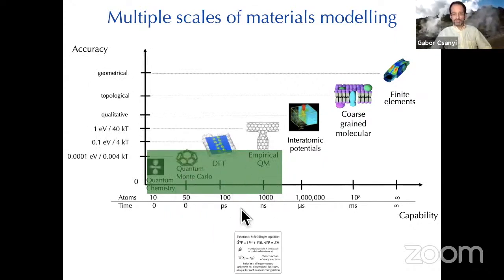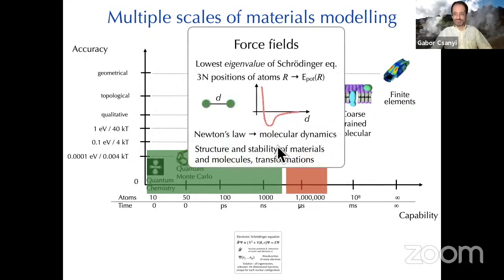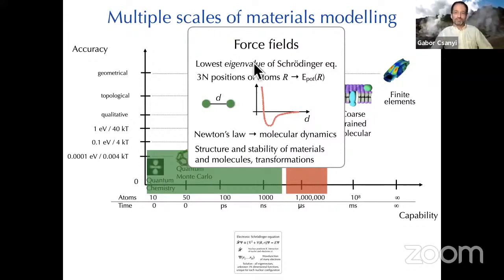Of course, this psi is a very high-dimensional object. It's the wave function of many electrons for a given set of nuclear positions. As you go up higher, you are able to treat more atoms, but on the vertical axis you lose accuracy due to the approximations that you're doing.